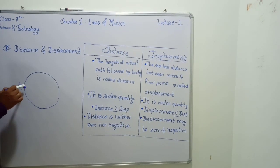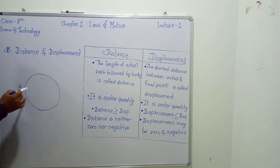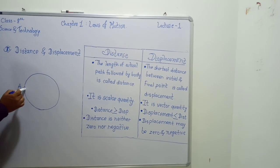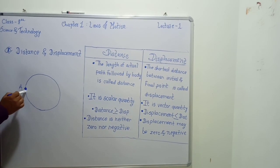Here, the initial point is also A and the final point is also A. So the distance between initial and final point, that is shortest distance, is zero. So here the displacement is zero.